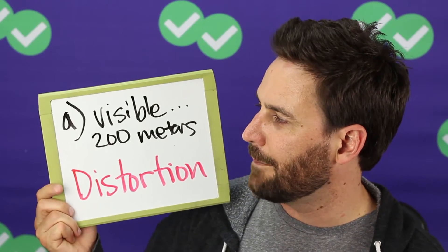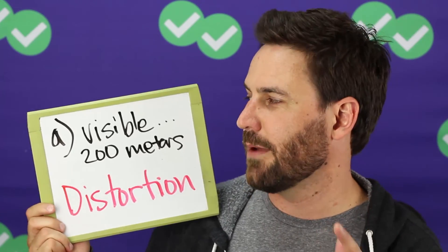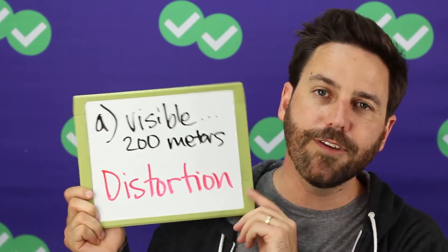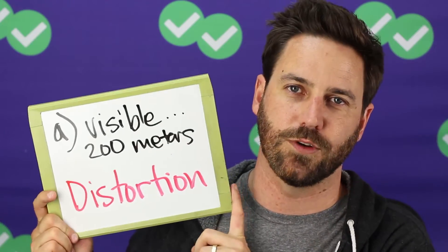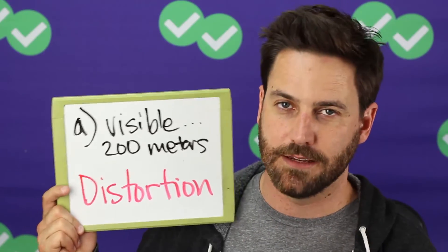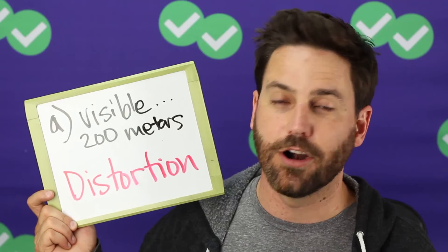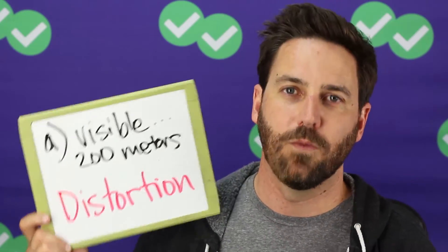Answer choice A talks about being visible at 200 meters. This is a perfect example of a distortion answer choice because this description is of theory A, not theory B. They want to make sure you're searching in the right part of the passage, not just finding information that's in the passage somewhere. You have to know what the question is asking. I'm looking for theory B information — that was theory A.